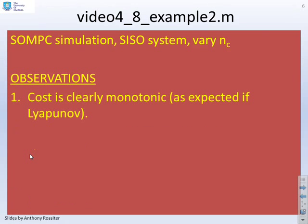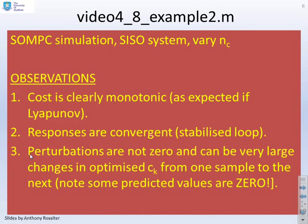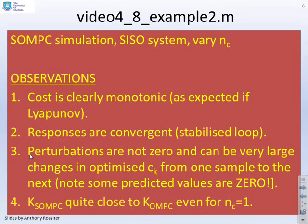So if we summarise that, the cost is clearly monotonic. The responses are convergent. The perturbations are not zero, that's the C terms, and can be very large. And the changes in the optimised C change from one sample to the next. And you'll notice that KSOMPC is quite close to KOMPC, even for NC equals 1.